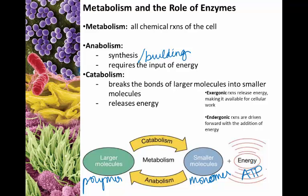Catabolic reactions are what we consider breaking reactions, where the bonds of larger molecules are broken and smaller molecules are formed. As those bonds are broken, energy is released. The catabolic and anabolic reactions basically feed one another in a cyclic interaction. You can also refer to these as exergonic and endergonic reactions — exergonic reactions release energy, while endergonic reactions are driven forward with the addition of energy, such as ATP being used to make larger molecules.